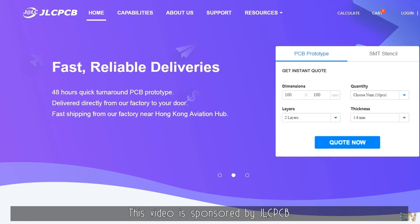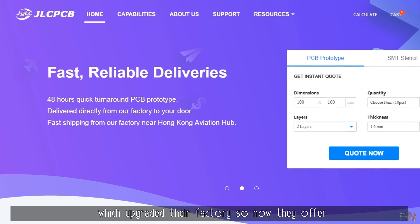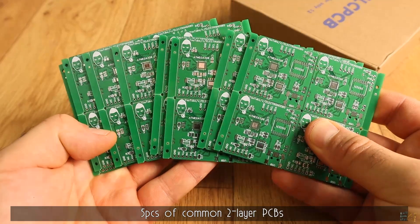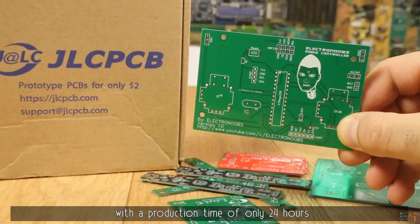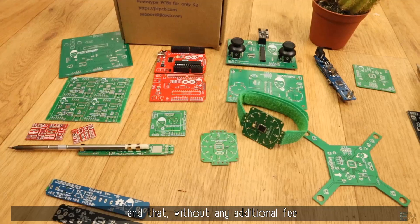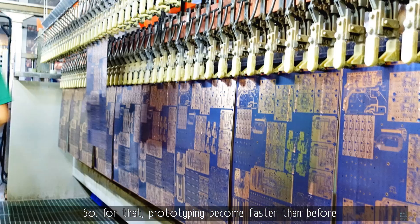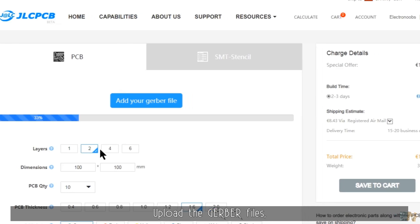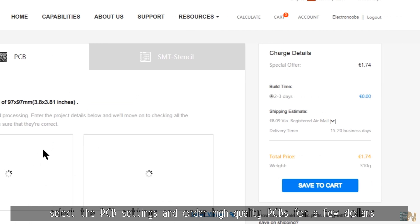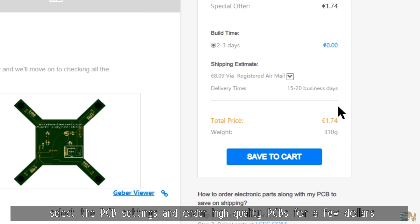This video is sponsored by JLCPCB, which upgraded their factory so now they can offer 5 pieces of common 2 layer PCBs with a production time of only 24 hours and that without any additional fees. So prototyping becomes faster than before but for the same low price. Upload the Gerber file, select the PCB settings and order high quality PCBs for a few dollars.